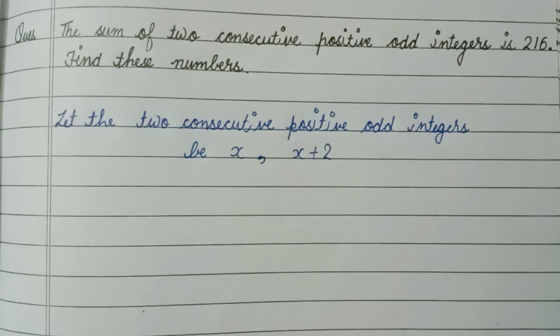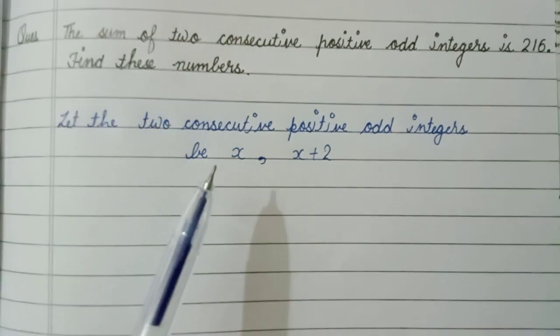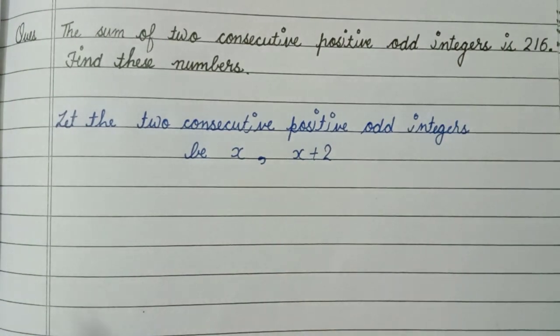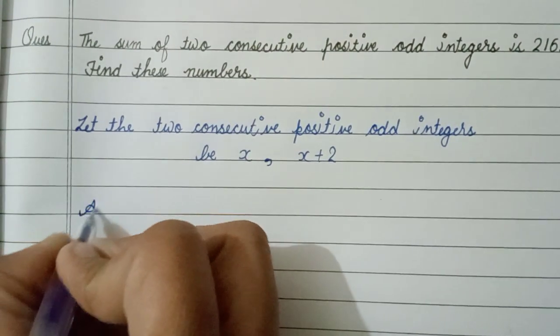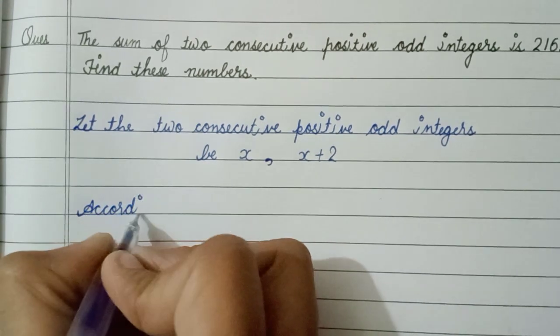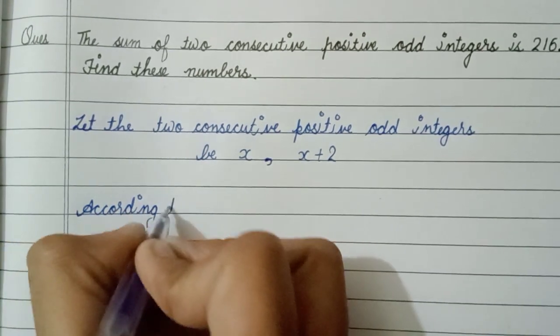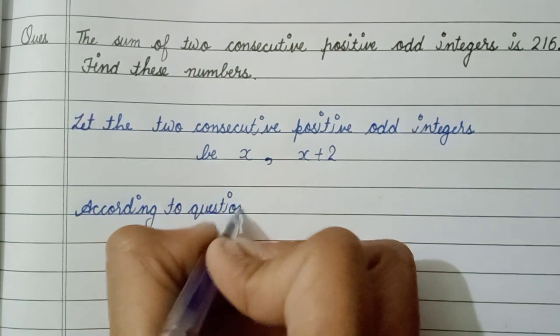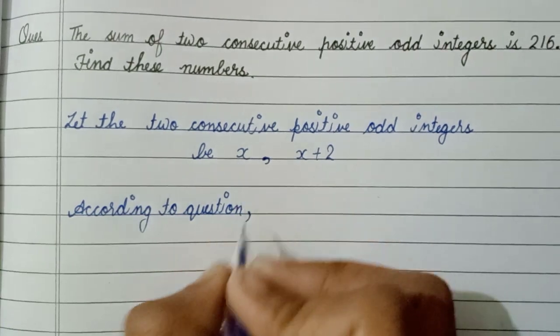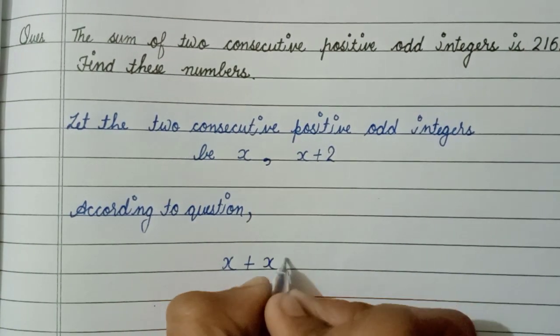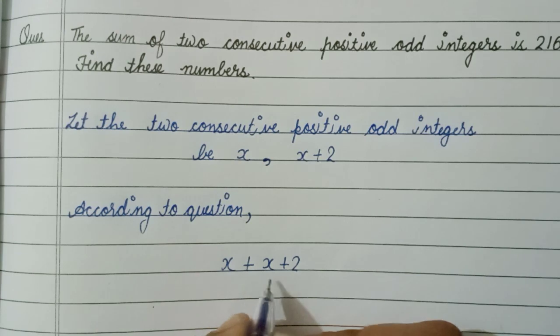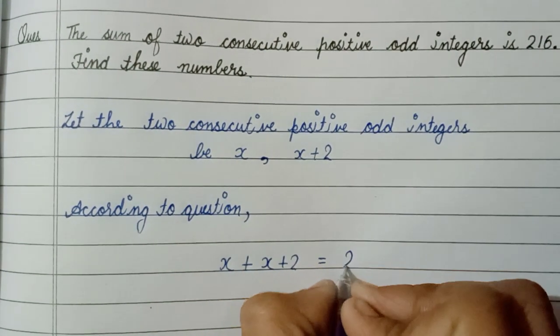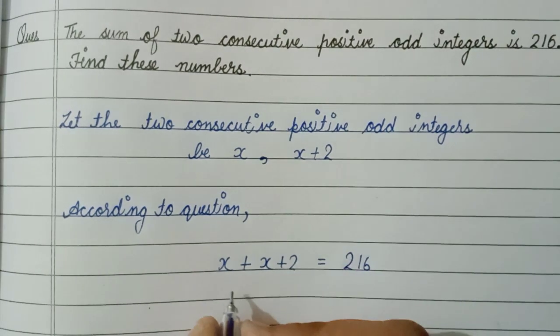Now according to question, the sum of two consecutive positive odd integers is equals to 216. So x plus x plus 2, the sum of two consecutive odd integers, equals 216. Now solve this.